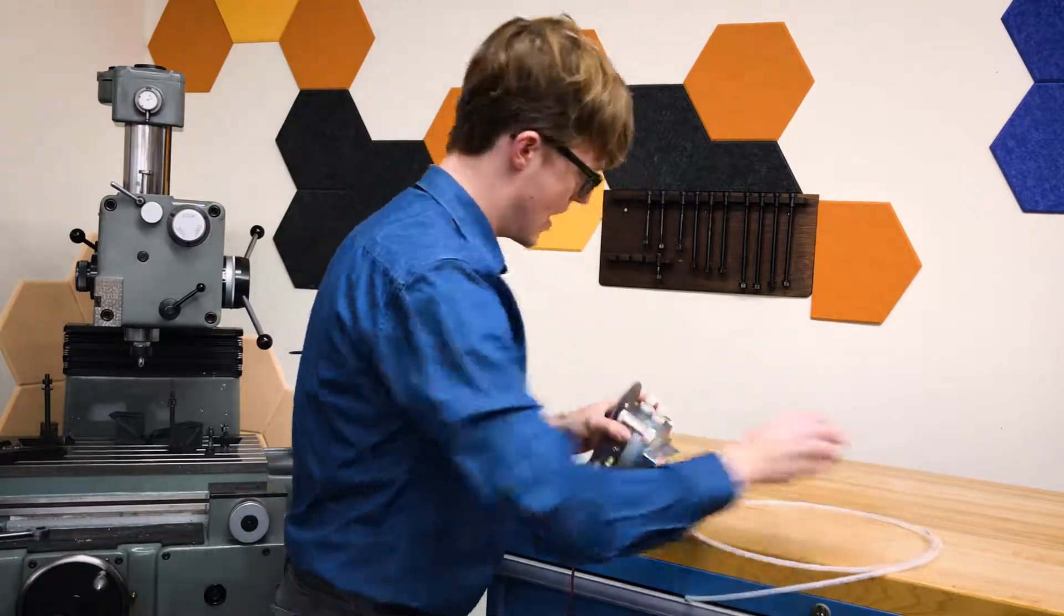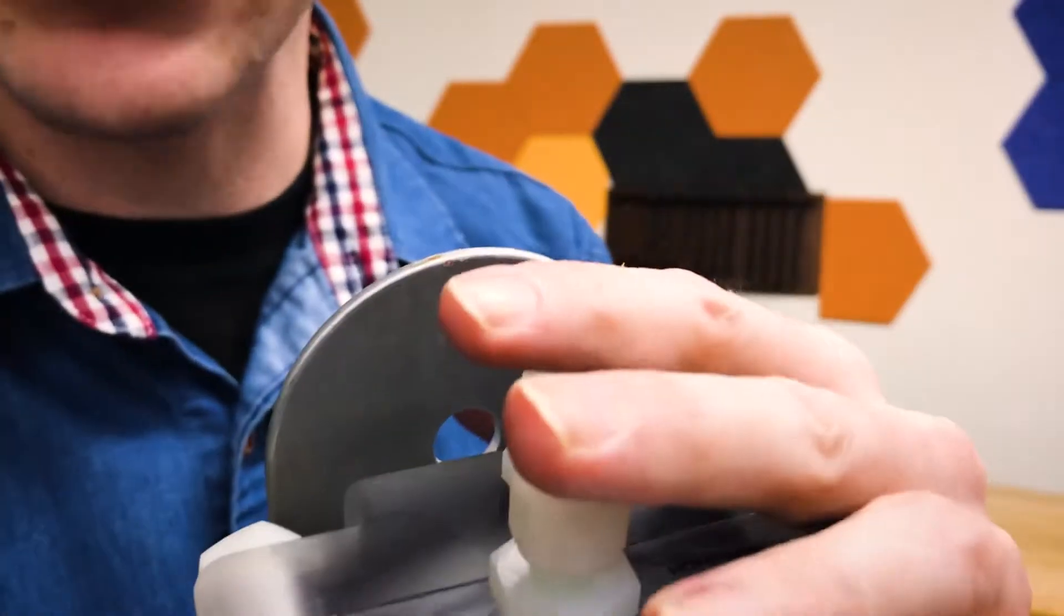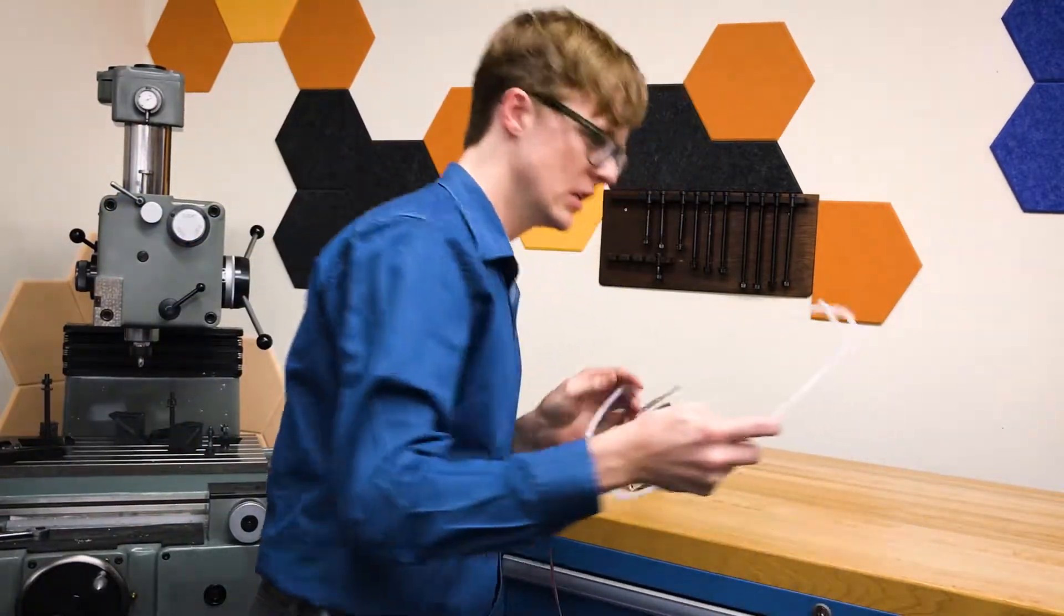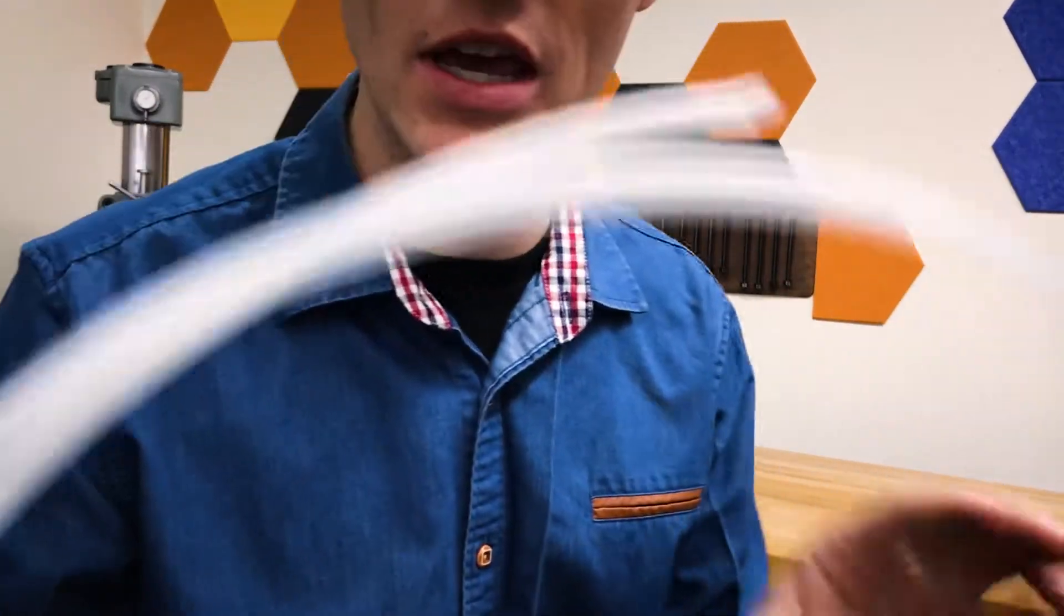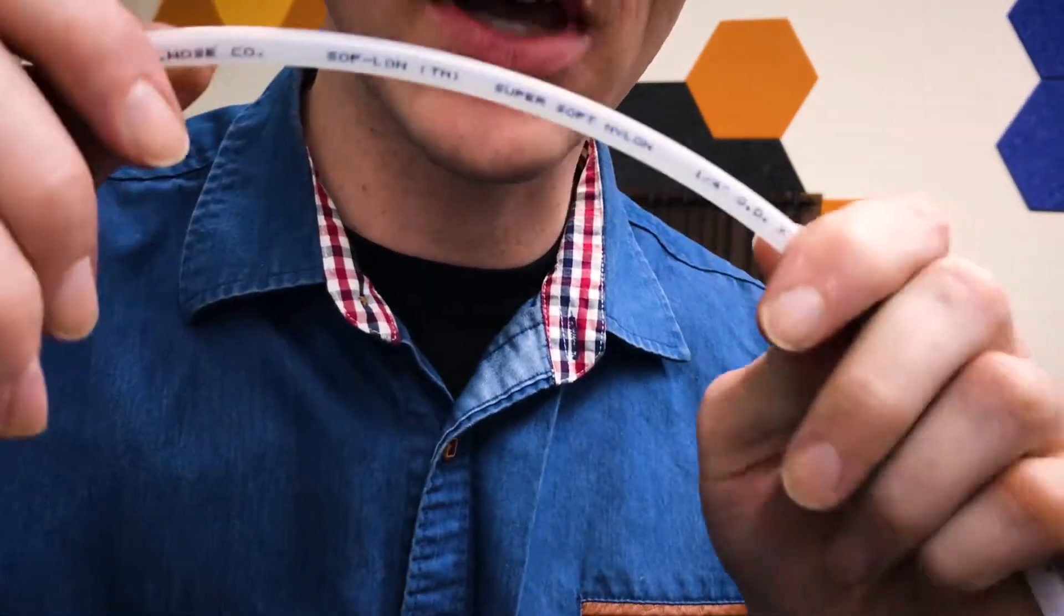So I have two gas ports on here, they're identical quarter inch Swagelok fittings, they already have the ferrules installed. I have my piece of tubing here, quarter inch outside diameter nylon tubing. You can get it at McMaster-Carr or Home Depot or wherever. And I have a couple tools for cutting the tubing.